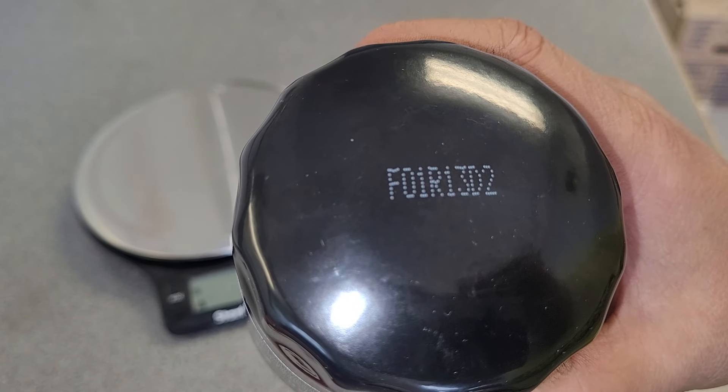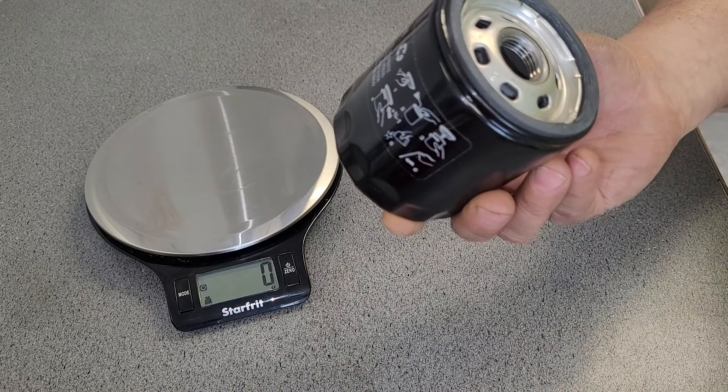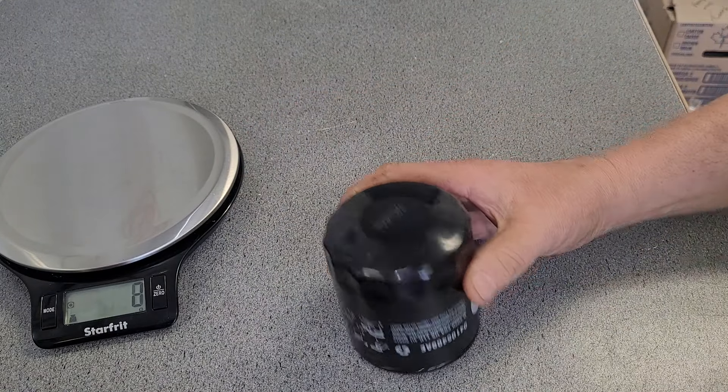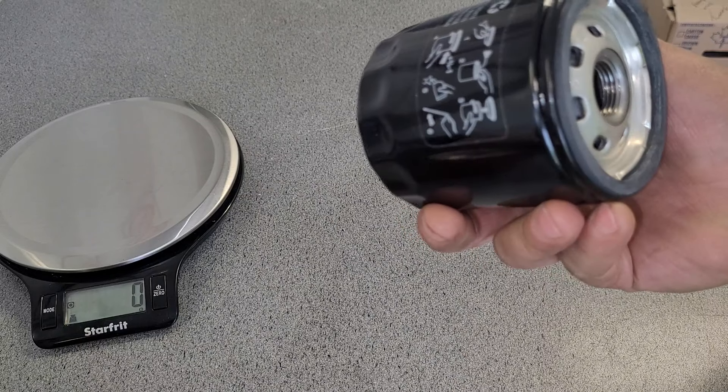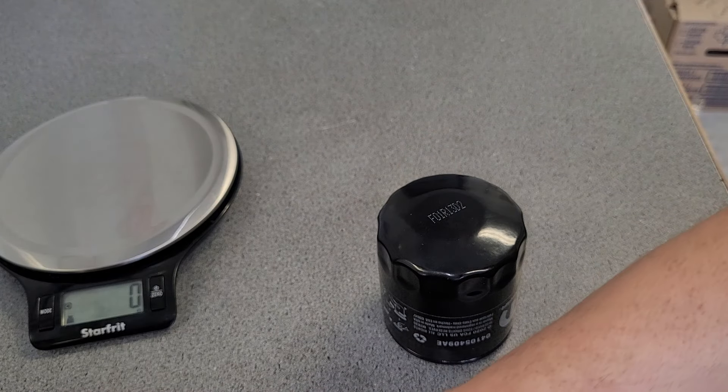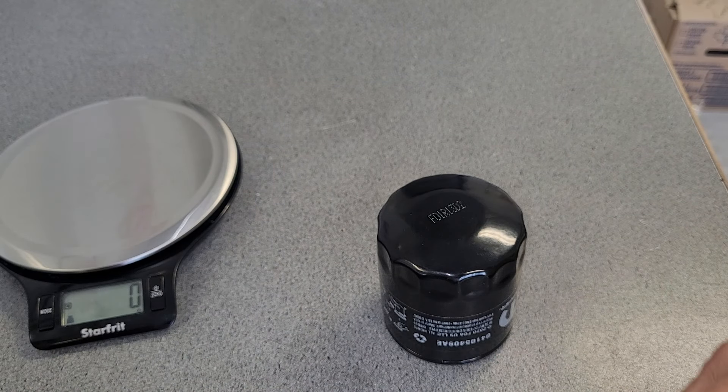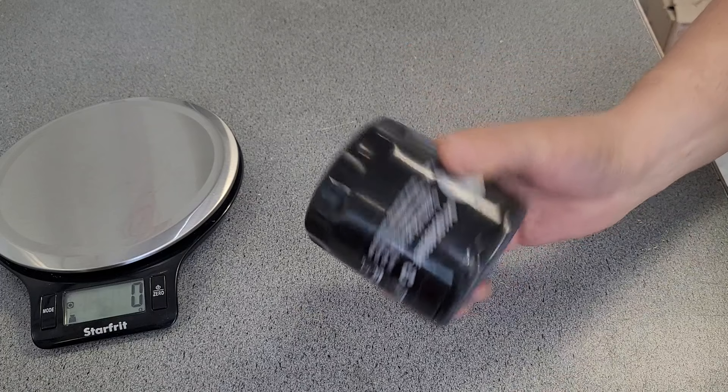All I know, this looks like a fine filter. I gotta admit. Nice heft to it. I mean, you could throw that thing pretty good in the backyard if you got mad at it. I'm pretty sure you could reach the neighbor's yard pretty easily. It feels about the same for the Purolator. The weight on that? 2.49 grams.